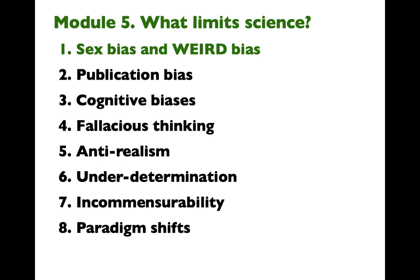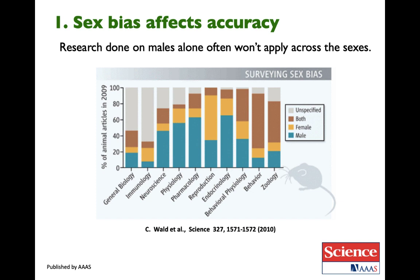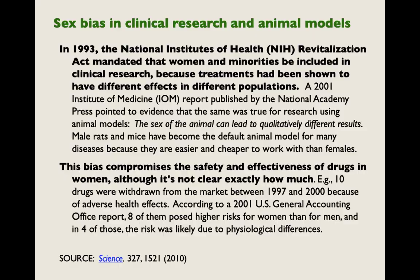Here's my list of what limits science. Let's begin with sex bias and WEIRD bias. Sex bias affects accuracy. Research done on males alone often does not apply across the sexes. In 1993, the National Institutes of Health Revitalization Act mandated that women and minorities be included in clinical research, because treatments had been shown to have different effects in different populations. A 2001 Institute of Medicine report pointed to evidence that the same was true for research using animal models. The sex of the animal can lead to qualitatively different results. Male rats and mice have become the default animal model for many diseases because they are easier and cheaper to work with than females.